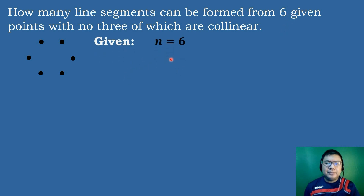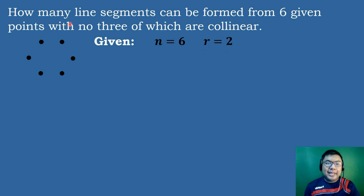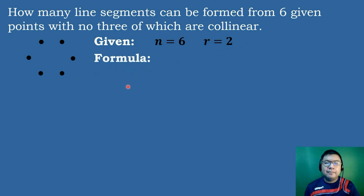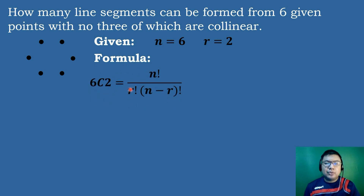The number of objects N equals 6 because there are 6 given points. To create a line segment, we need 2 points, so R equals 2. We use the formula NCR equals N factorial over R factorial times the quantity N minus R factorial.